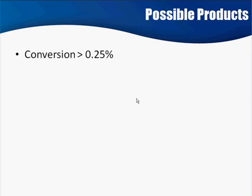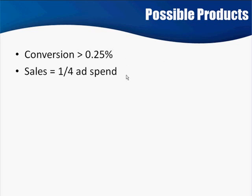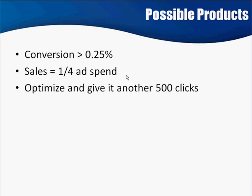Here is the gray area — possible products. You're not going to disqualify them right away; you're going to give them a second chance. If the conversion is greater than 0.25% AND the sales are equal to or greater than one quarter of your ad spend, taking both factors together, we're going to go back and optimize things, give it a reevaluation, and give it another 500 clicks to give it a chance — because it might very well pan out.